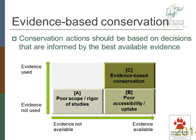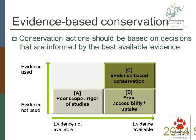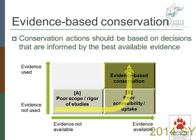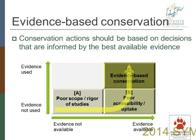If you think about this on these two spectrums, on the bottom we've got where evidence is not available or where it is, and going up on the y-axis where evidence is not used or it is used. Clearly this quadrant doesn't make any sense because you can't use evidence if it's not available. We sort of move in a direction from quadrant A, where evidence is not used because it's not available — so we really just don't know anything — to a place where evidence is actually available but it's not being used, due to poor accessibility or uptake, or the fact that conservation practitioners don't have access to the evidence in the journals. And then ideally we're moving up into quadrant C, where we have evidence-based or evidence-informed conservation because it is available, accessible, and being used by anybody.